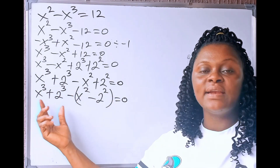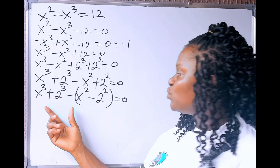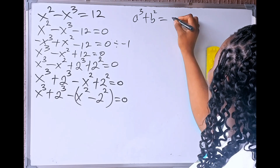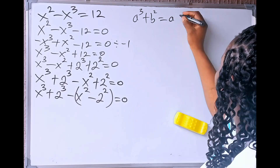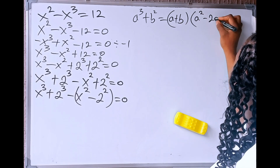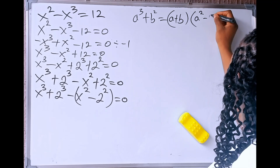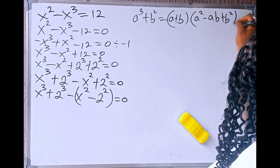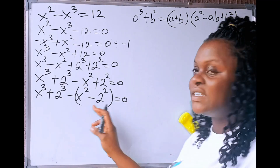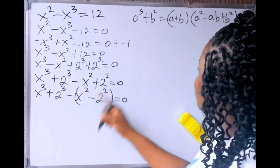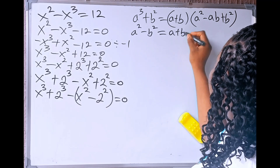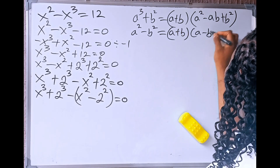Now we are going to be applying an algebraic identity rule. The rule says that a cubed plus b cubed equals (a plus b) into (a squared minus ab plus b squared). And for the second one, this is the difference of two squares, and the rule says that a squared minus b squared equals (a plus b) into (a minus b).